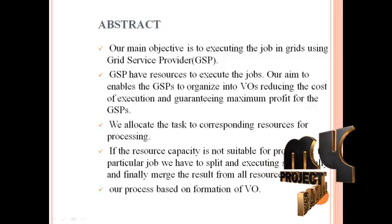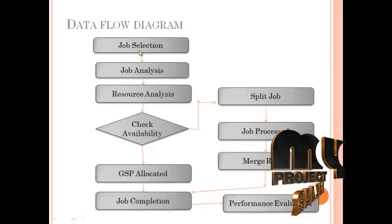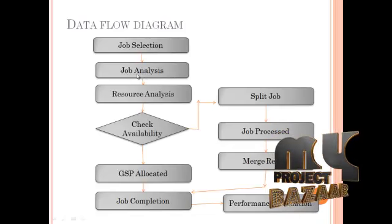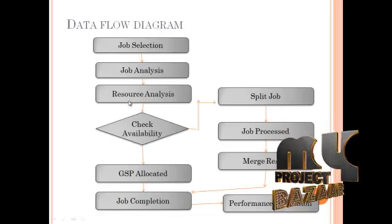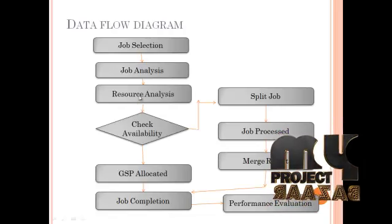Our process is based on the formation of BBO. Looking at the flow diagram: first, a job is selected by the user. Then we analyze the job — that means analyzing the capacity of the incoming job, the file size, file MB, file length, and the type of file or job it is. Next is resource analysis: what type of resources are formed in the virtual organization in the GSP. The resource capacity is static, and we have defined capacity for executing each job.